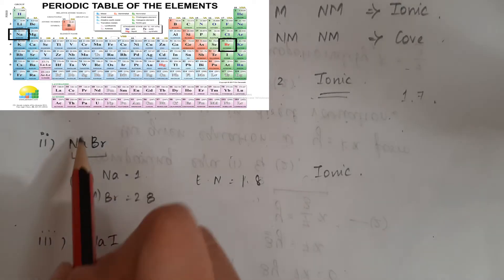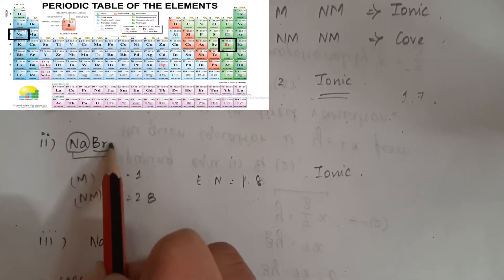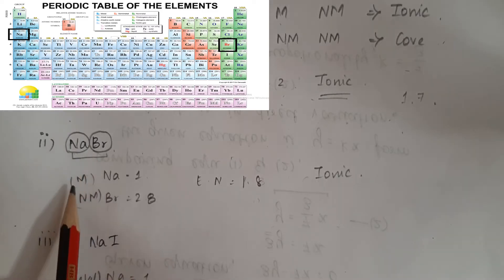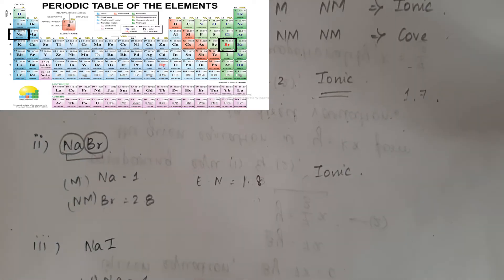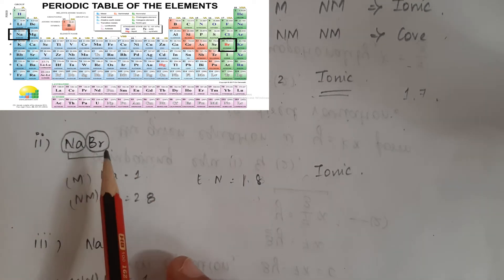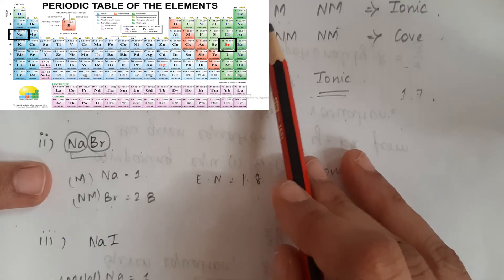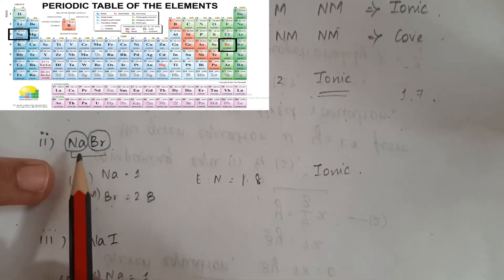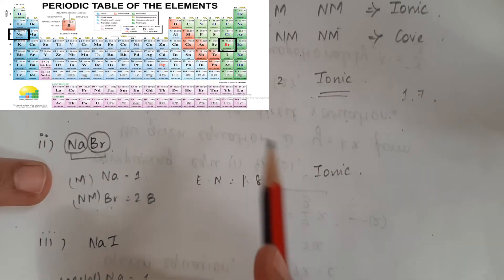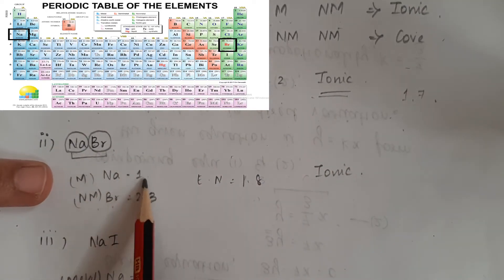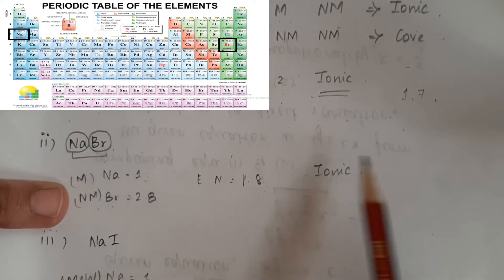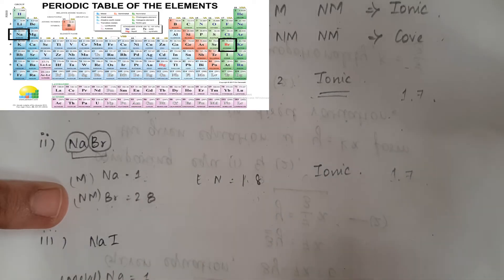Next molecule is sodium bromate. In this molecule, the atoms are sodium and bromine. Sodium is a metal; bromine, shown in green color, is a non-metal. So metal and non-metal means ionic bonding. Checking electronegativity: sodium's value is 1, bromine's value is 2.8, and the difference is 1.8, which is greater than 1.7 — so the answer is ionic bond.